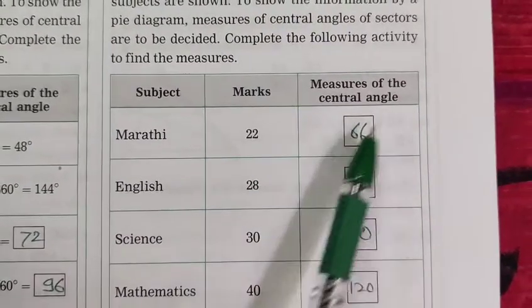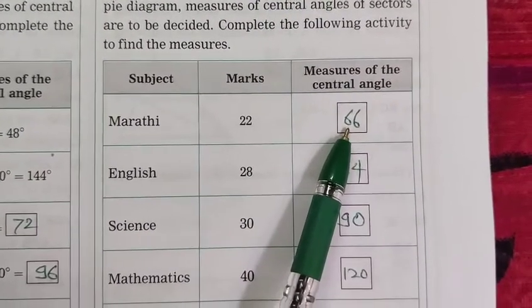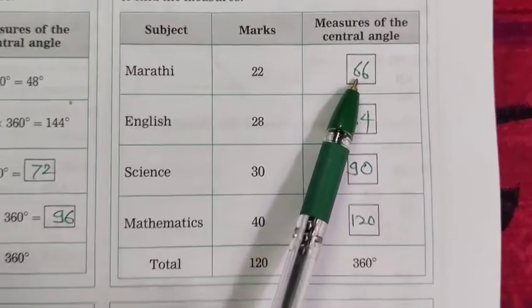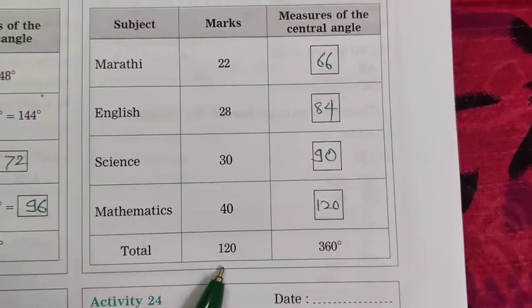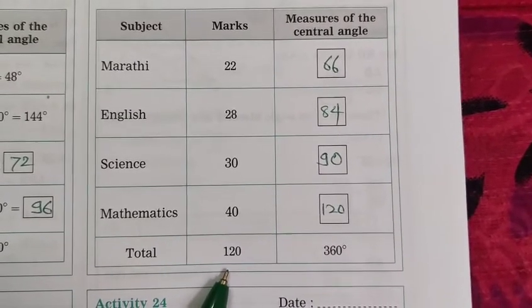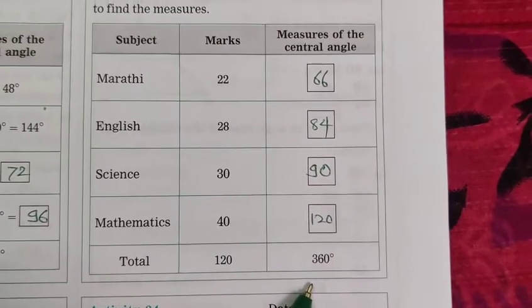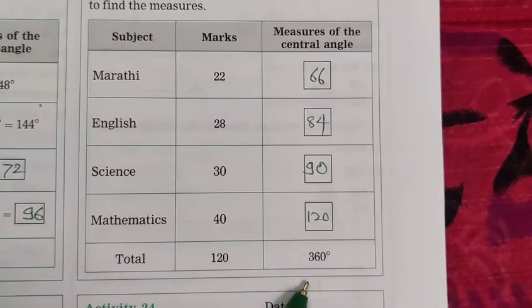Subject, marks, and measures of the central angle. In Marathi, 22 marks and measures of the angle, central angle is 66. In this activity, what is given is the total. Subject total, marks 120, and here measures of the central angle is 360.